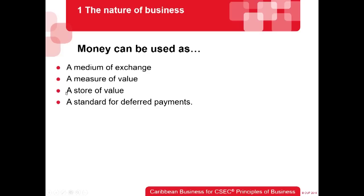Money as a store of value — what does this mean? Money can be used to store a person's wealth and riches. You go to the bank, put $100 in your account, leave it there, and you can store it, add more and more to it over time. Remember, batter had an issue with storage — goods would spoil. But money doesn't spoil. You put it in the bank and it can be left there over years, building your value and your wealth.